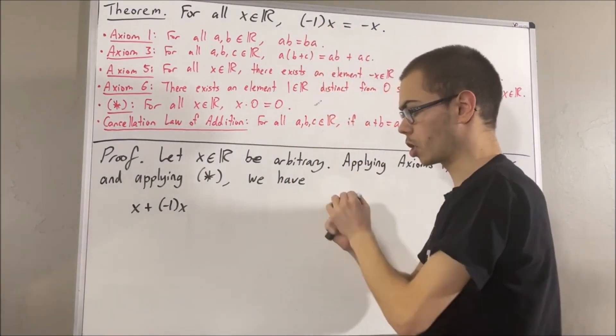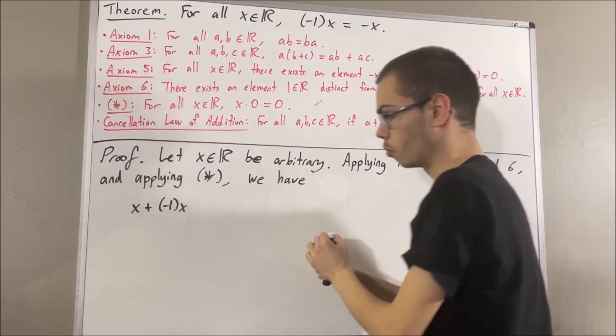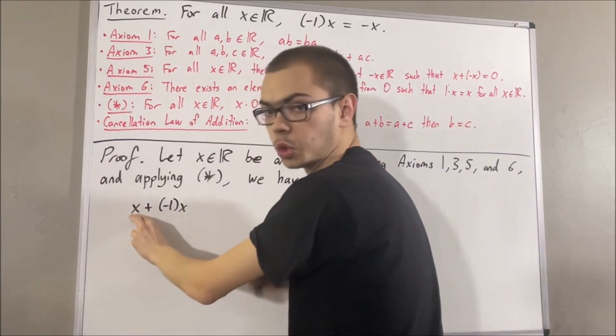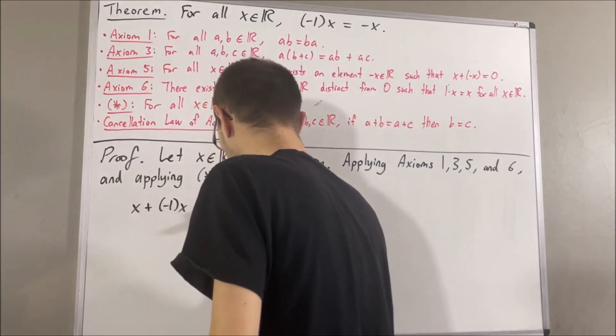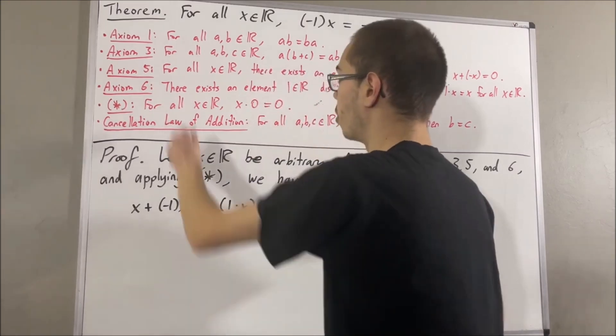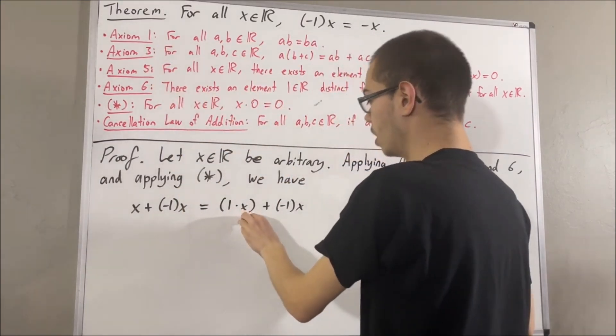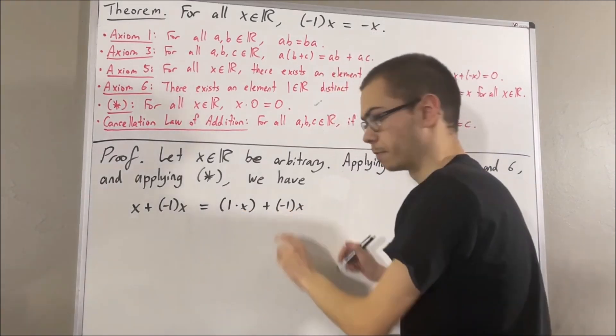So to start out, first of all, we know by axiom 6 that x is equal to 1 times x. And then, applying axiom 1, we can rewrite 1 times x as x times 1. We can rewrite negative 1 times x as x times negative 1.